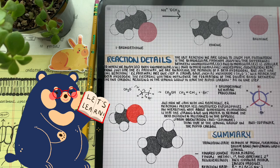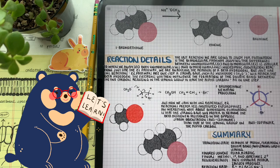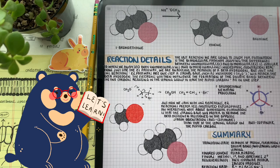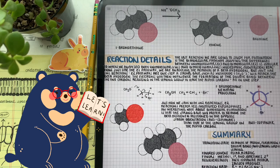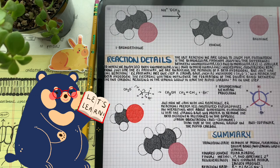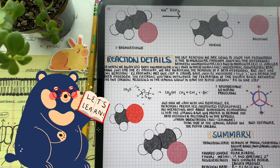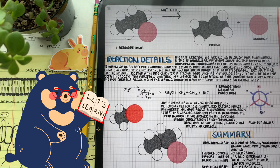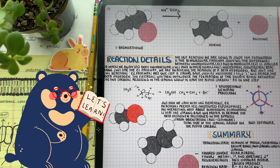E2 pathways are very similar. They prefer less substituted alkyl chains such as primary, and it happens in one step. Usually preferring a strong base, the base is going to rip a proton off of a beta carbon, pushing the leaving group off, all in one step.